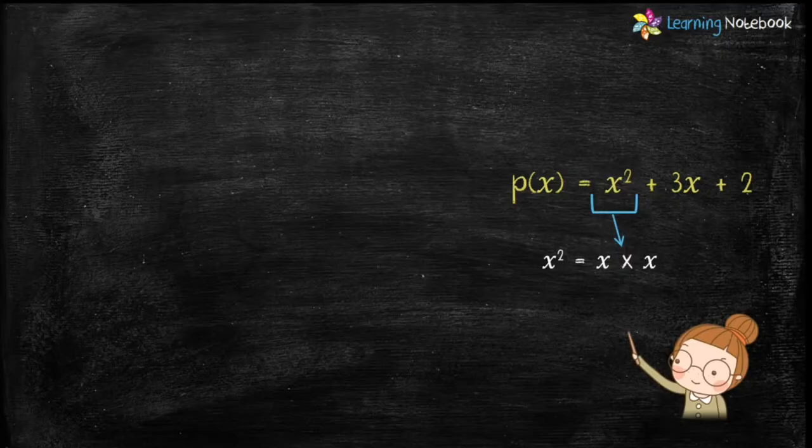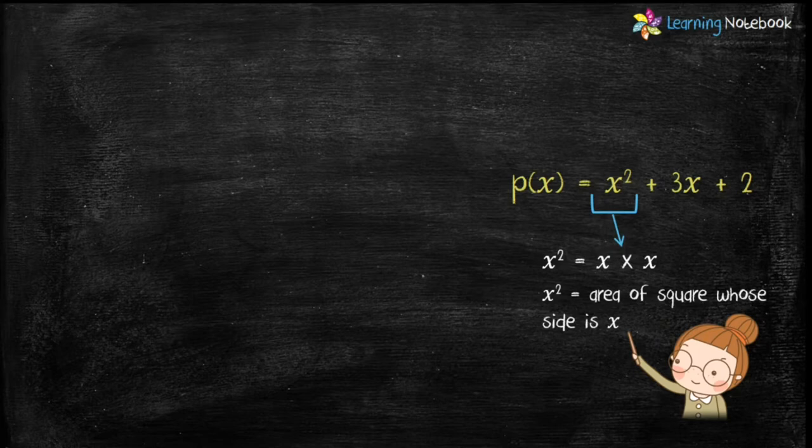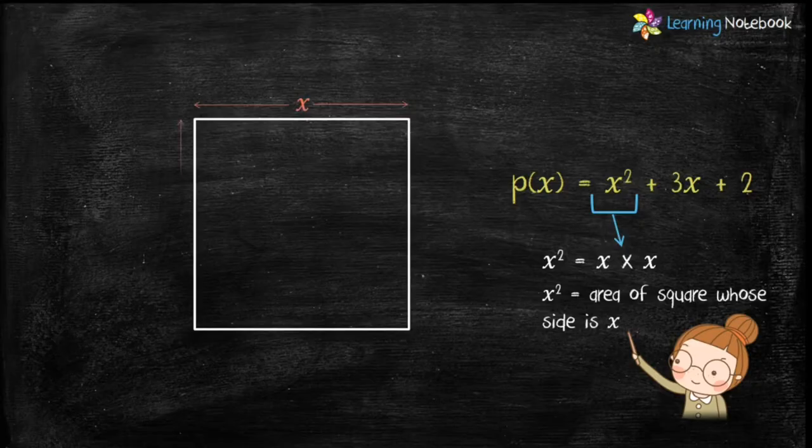First let's draw the first term of the polynomial which is x². x² equals x times x. Therefore x² is the area of a square whose side is x. So students, let's draw a square of side x.